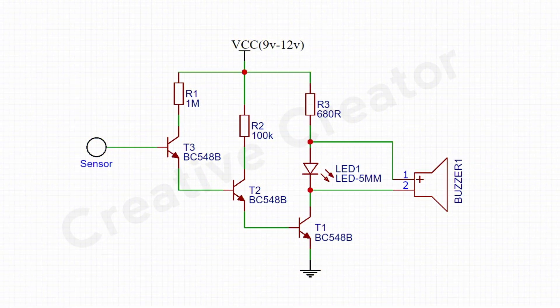Let's talk about the circuit diagram. Here I have used BC548 NPN transistor for sensing the AC signal. When I am taking the signal wire near the 3-pin outlet, the transistor 3 becomes slightly conductive. This generated signal is very weak, so we need to amplify the signal for running the LED as well as the buzzer.